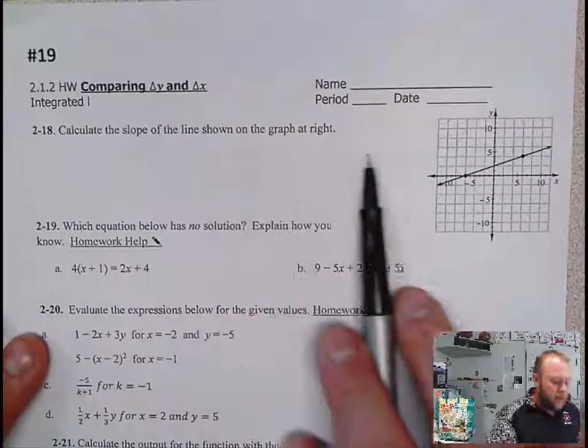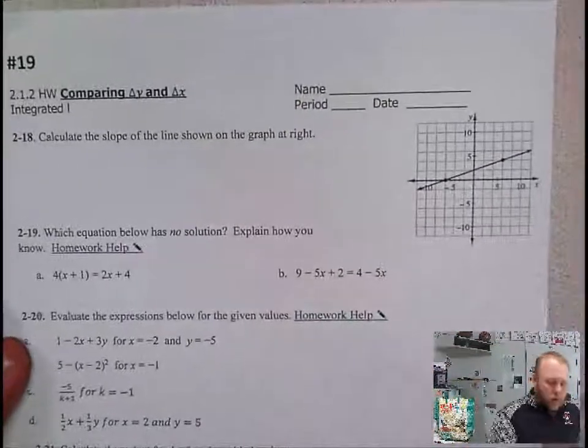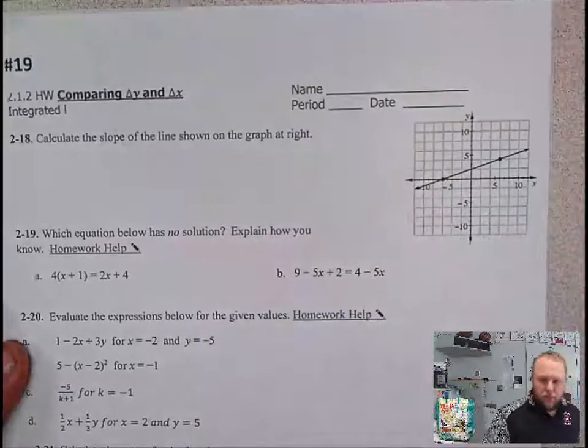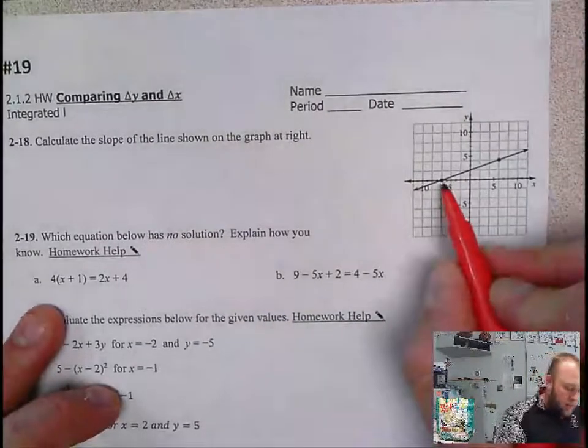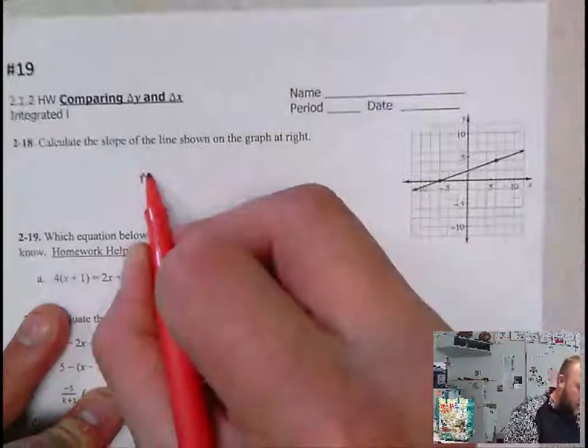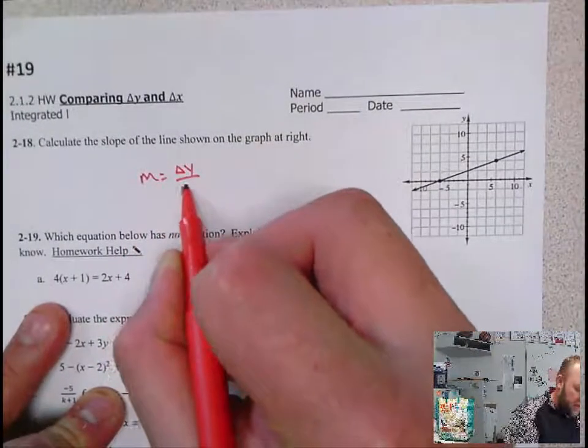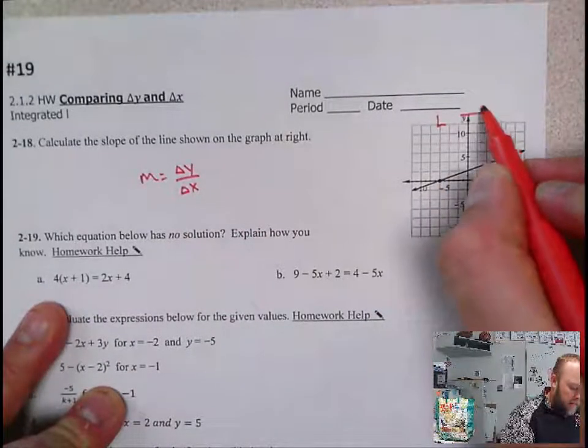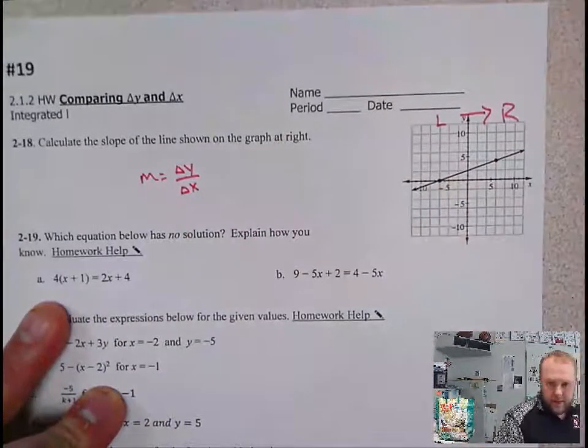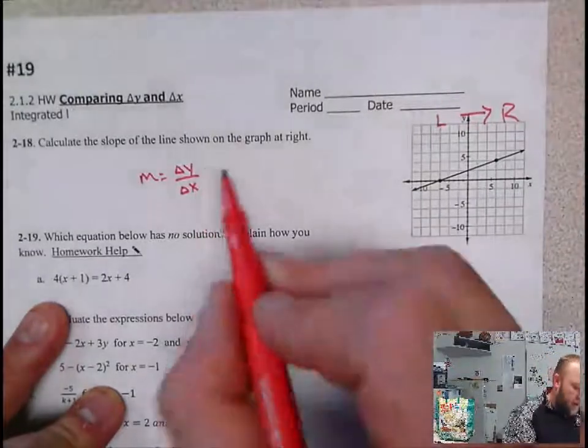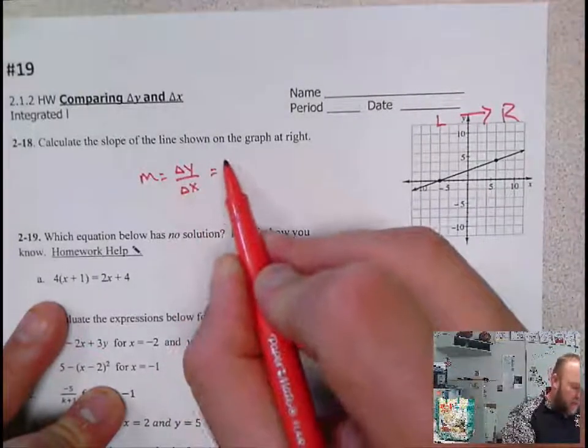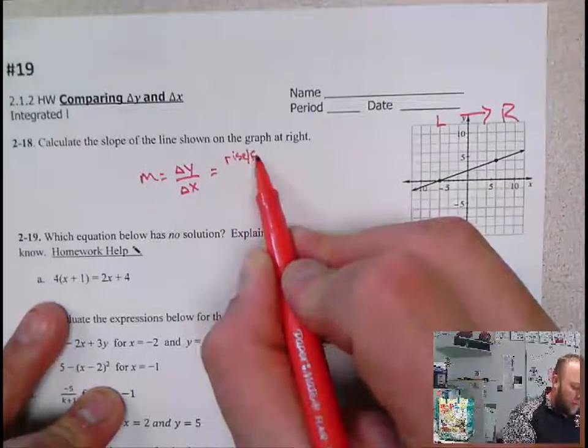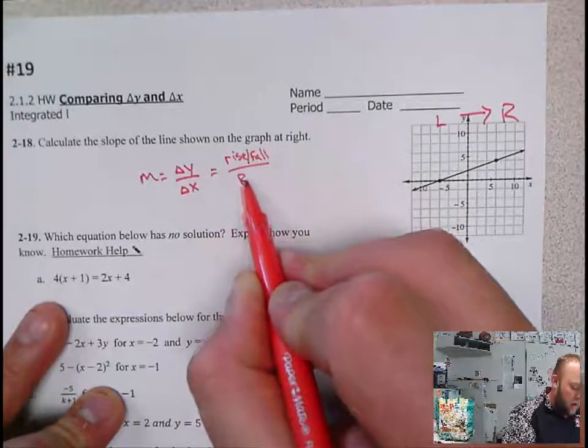First problem in homework number 19 is problem 18. Calculate the slope of the line shown at the graph to the right. One nice thing is this line shows us these two points. So what I'm going to do, remember slope is equal to the change in y over change in x. And we always read our graphs from left to right. Now with this change in y over change in x, remember that's just the rise or fall over the run.